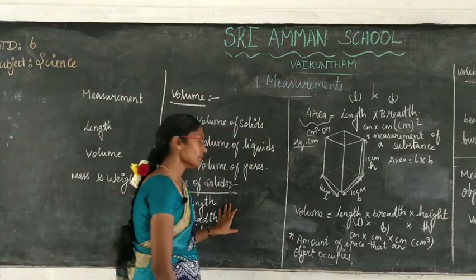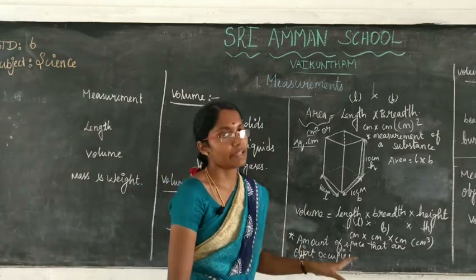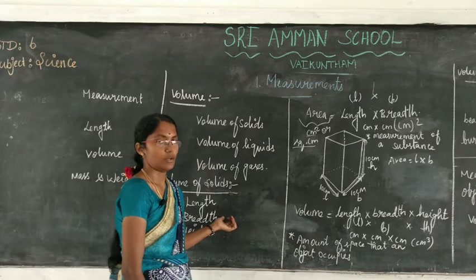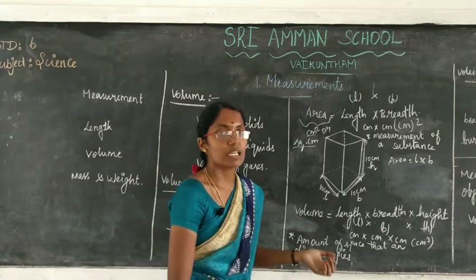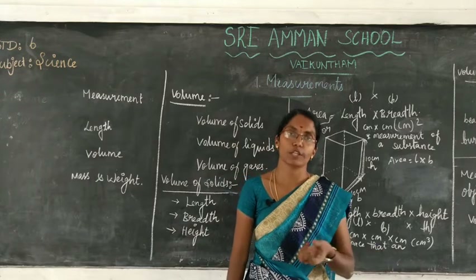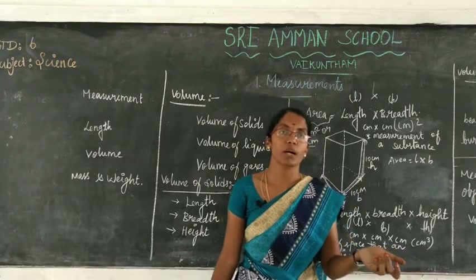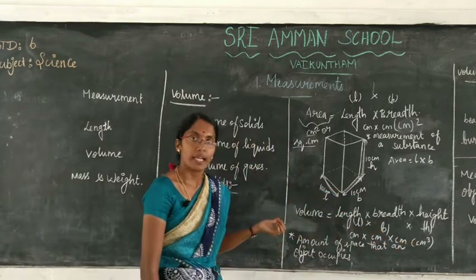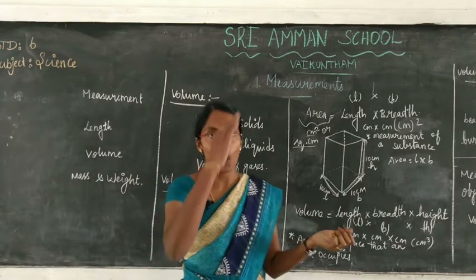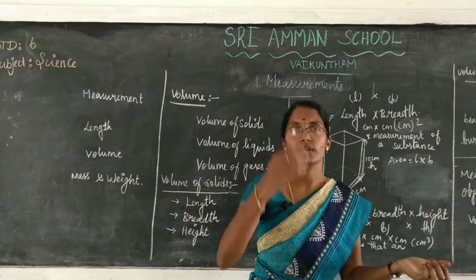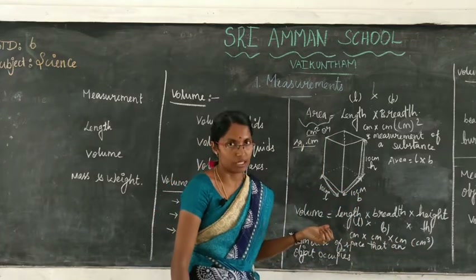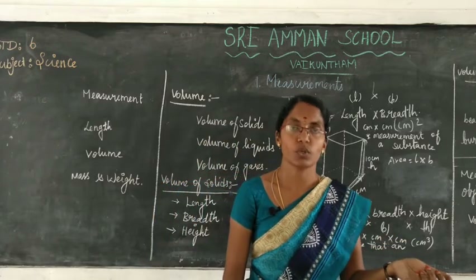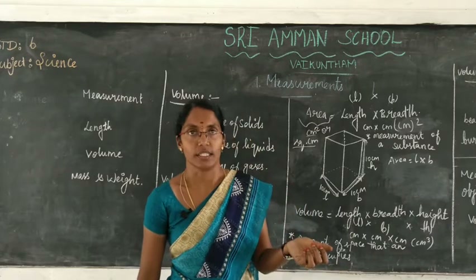The SI unit of length is meter. Breadth is the distance or measurement from one side to the other side, and it is also measured in terms of meter. Height is the measurement from top to bottom or from bottom to top, and it is also measured in meters. We need length, breadth, and height to find volume, so these are the fundamental or basic quantities.